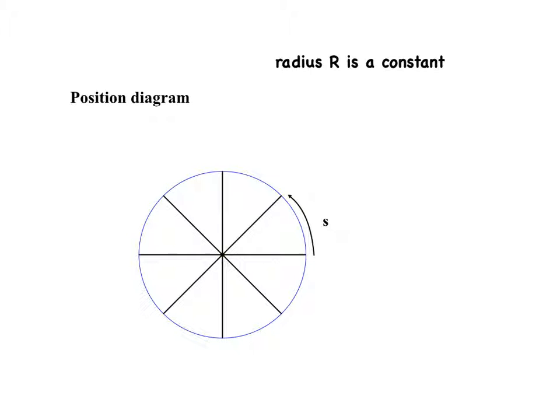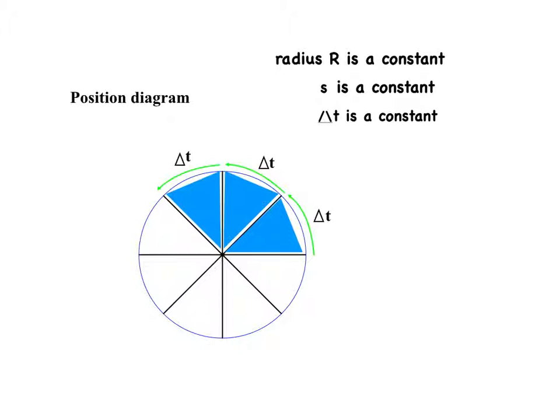Let's call the length of the arc for each segment S. Obviously, the areas of each wedge are also equal to one another. And because the areas are all equal, the times needed to sweep out each wedge are also all equal, delta t, according to Kepler's second law, which Newton proved.